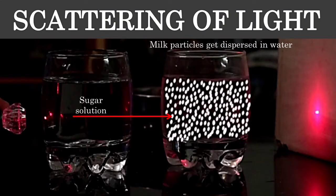So when milk is added to water, the milk particles get completely distributed throughout the medium, and when the light ray strikes one of the milk particles it gets scattered to different directions.